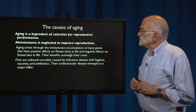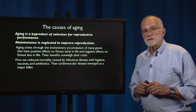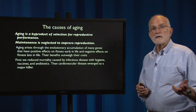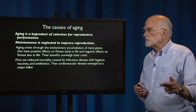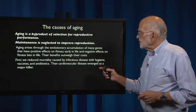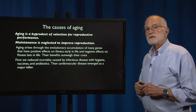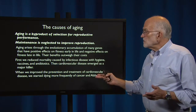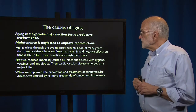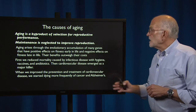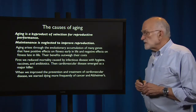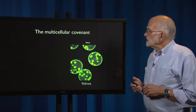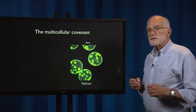First we reduced mortality caused by infectious disease — we did it with hygiene, vaccines, and antibiotics, mostly in the 20th century. Then cardiovascular disease emerged as a major killer. Then we improved the prevention and treatment of cardiovascular disease, but we started dying more frequently of cancer and Alzheimer's. There isn't really any end of that in sight.